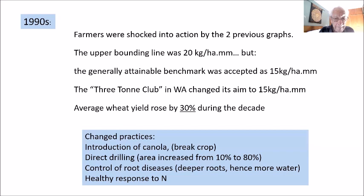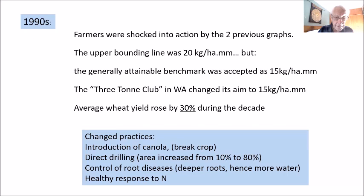The farmers were shocked into action by those graphs. The upper bounding line was 20 kilograms per hectare per millimetre, but at that time in pretty perfect conditions the generally attainable benchmark was accepted fairly widely as 15 kilograms per hectare per millimetre. Subsequently it went up to 22, 25 and so on, and the Three-Tonne Club in Western Australia changed its aim to 15 kilograms per hectare per millimetre which is more accurate. During the 90s, the average wheat yield rose by about 30%. The changed practices that brought that about were the introduction of canola as a break crop that enabled wheat to grow much better after it, and direct drilling — the general direct drilling area in the 90s increased from about 10% to 70–80%. There was control of root diseases, and once they were gone there was a healthy response to N and you could get up to six or seven tons per hectare in Wagga Wagga Shire.